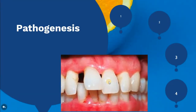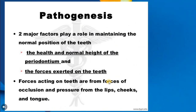Regarding the pathogenesis, two major factors play a role in maintaining normal position of the teeth: the health and normal height of the periodontium, and also the forces exerted on the teeth. Forces acting on the tooth come from occlusion and pressure from the lips, cheeks, and tongue.